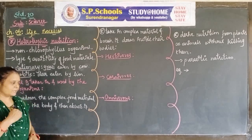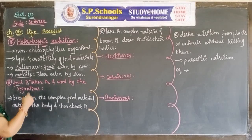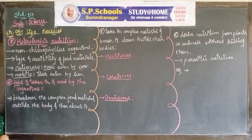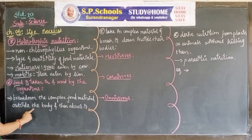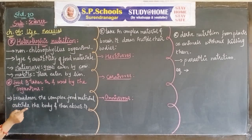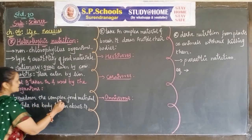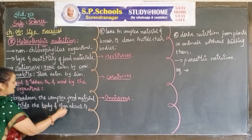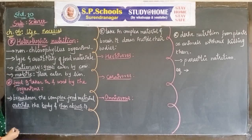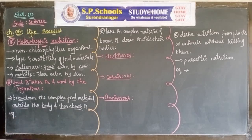In some organisms, they break down complex food materials outside the body and then absorb it. The examples of this type of organism are fungi, also bread molds and mushrooms. These organisms secrete enzymes outside, digest the food externally, and then absorb it.